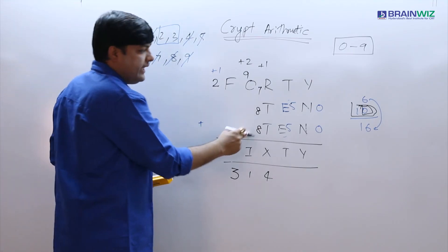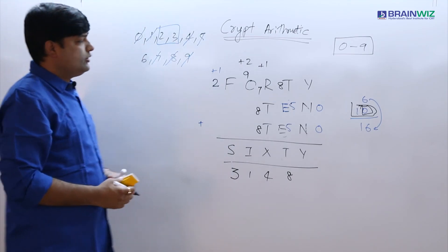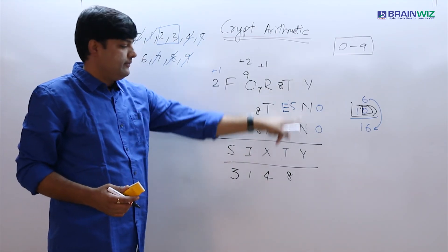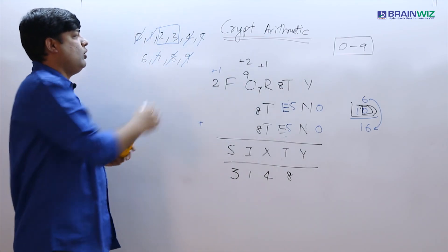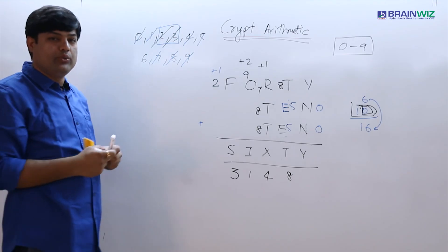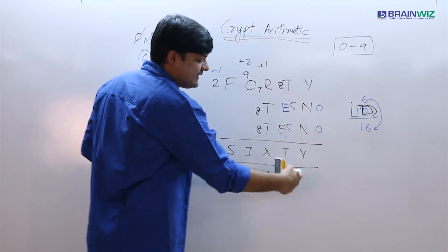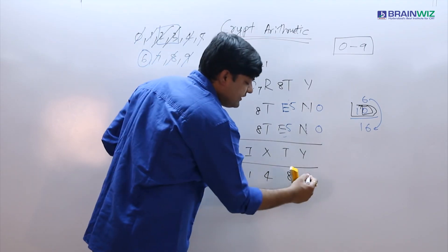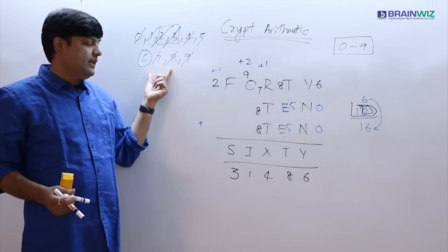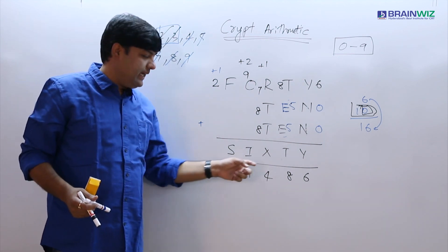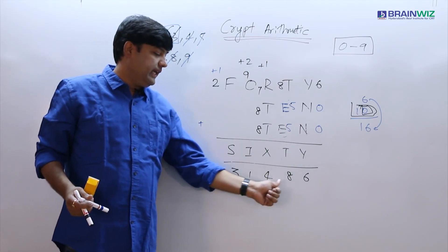So T equals 8. The only digit left is Y, and looking at the remaining digits after assigning all others, the only unused digit is 6. So Y equals 6. Therefore the value of SIXTY is S=3, I=1, X=4, T=8, Y=6, giving 31486.